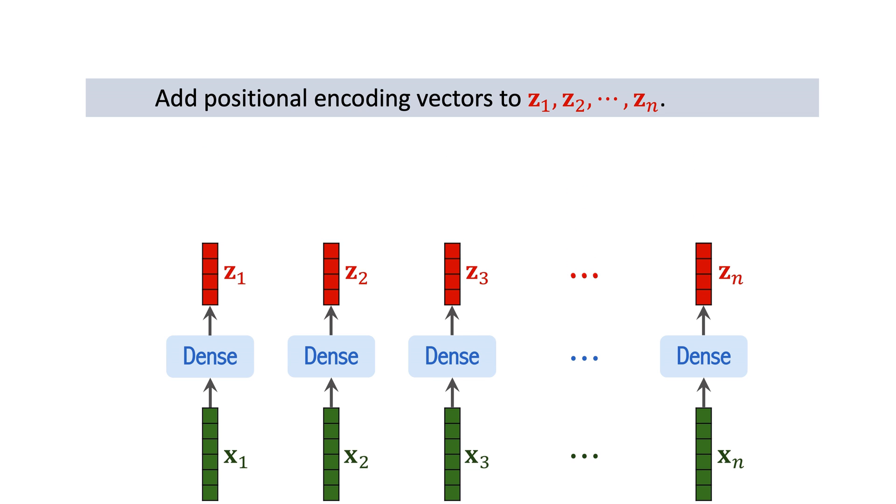Add the positional encoding vectors to the z vectors. In this way, a z vector captures both the content and the position of a patch. The vision transformer paper empirically demonstrated the benefit of using positional encoding. Without positional encoding, the accuracy decreases by 3%. The paper tried several positional encoding methods. Those methods lead to almost the same accuracy. So it is okay to use any kind of positional encoding.